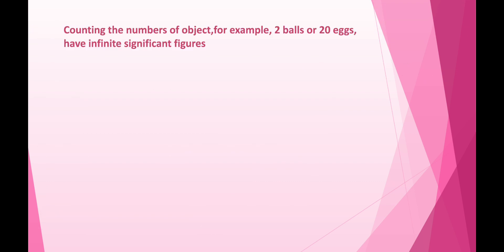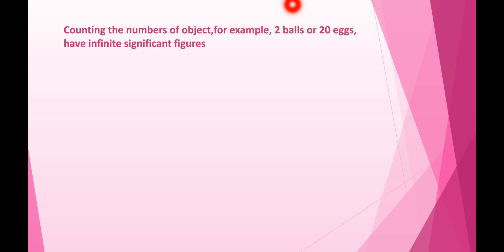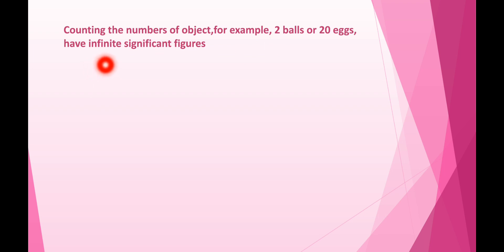One more thing to remember: when counting objects are given — for example, 2 balls, 20 eggs, or 1 dozen bananas — the significant figure for such numbers is infinite. So for 2 balls, the significant figure is infinite, and for 1 dozen bananas, the significant figure is also infinite.